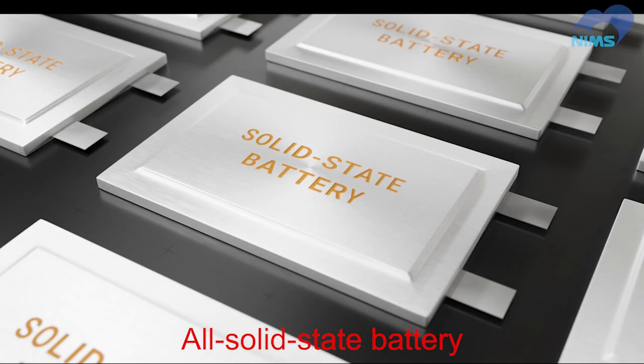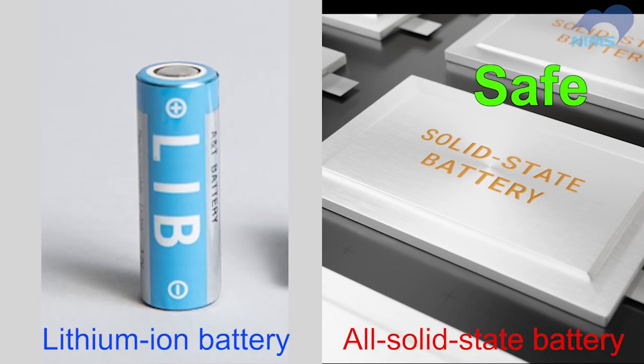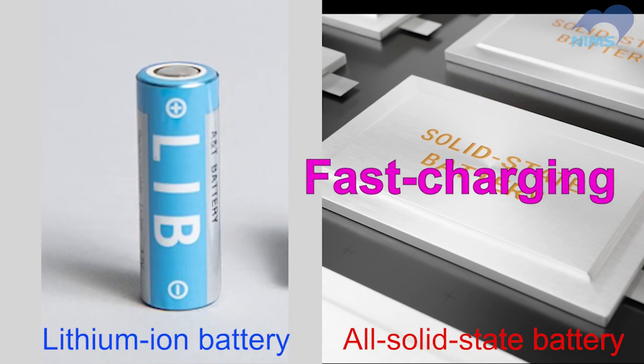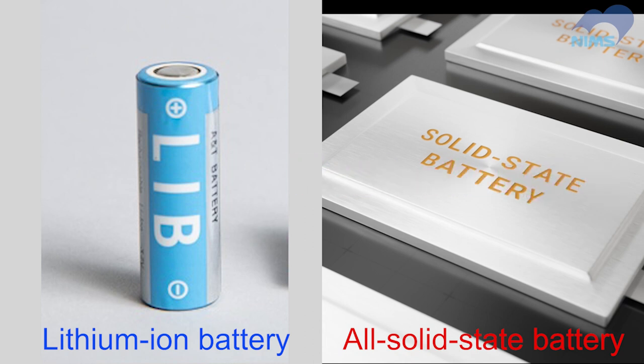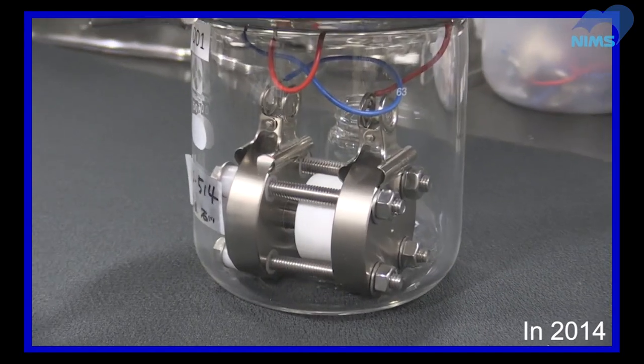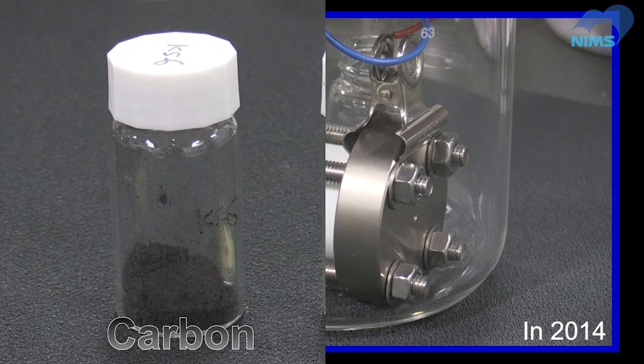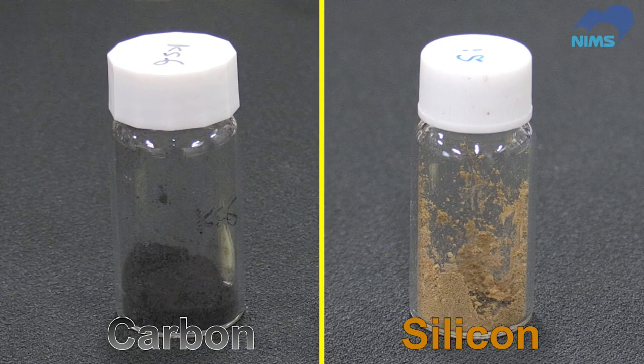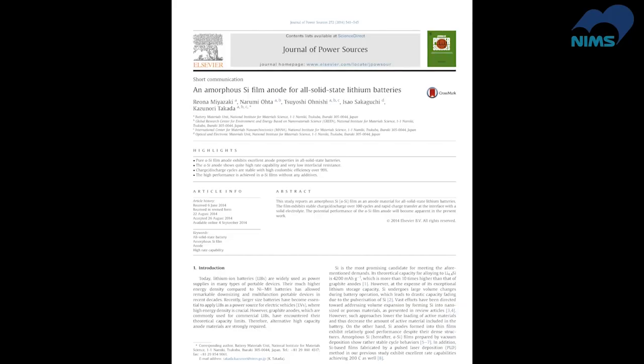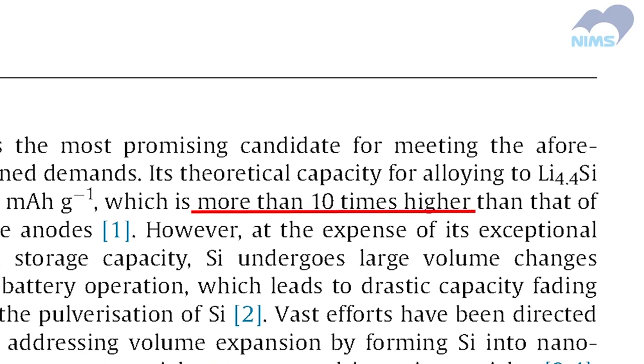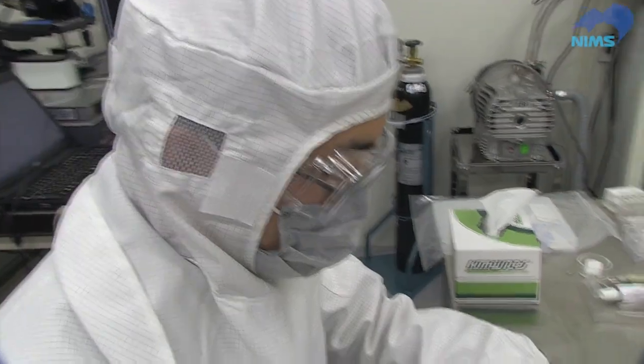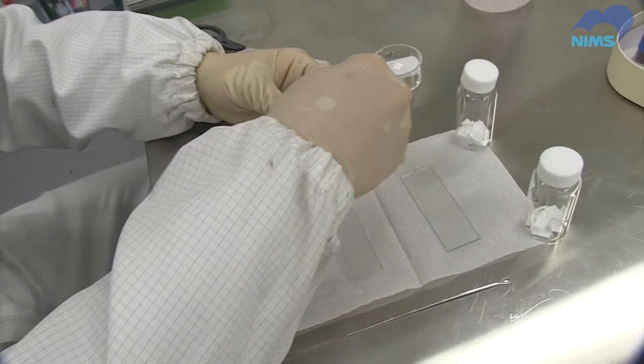When compared with conventional lithium-ion batteries, all solid-state batteries are safe and can be charged quickly. In 2014, NIMS succeeded in replacing graphite anodes with silicon for the first time in the world, greatly increasing battery capacity and paving the way to the development of high-energy density batteries. This is how silicon greatly increases capacity.